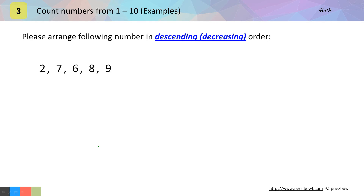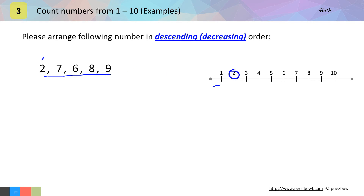We need to arrange two, seven, six, eight, and nine in descending order. Let us refer the number line and highlight all the numbers: we have two, then seven, after that six, then eight, and nine. Now we will write all the highlighted numbers from right to left — that means first we write the number highlighted on the extreme right, then move in the left direction.